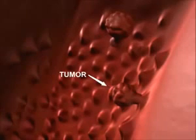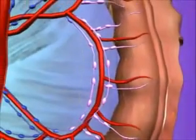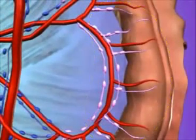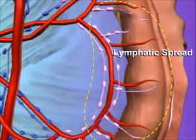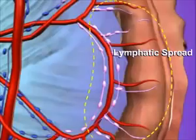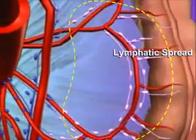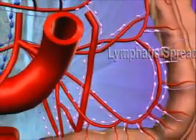Over a period of several years, a polyp has the potential to become cancerous. A cancerous polyp grows rapidly in size, eventually breaking through the wall of the colon and spreading through tiny channels called lymph vessels.